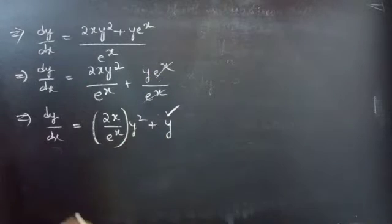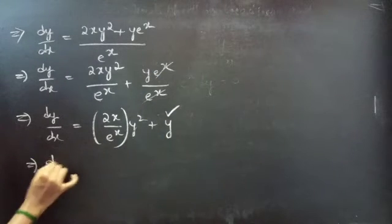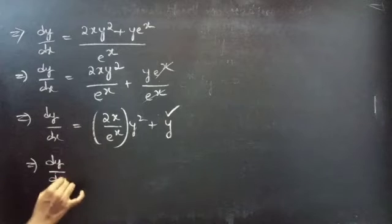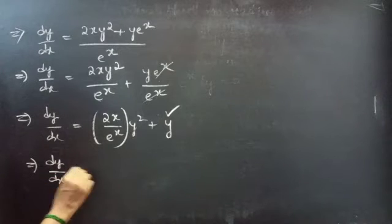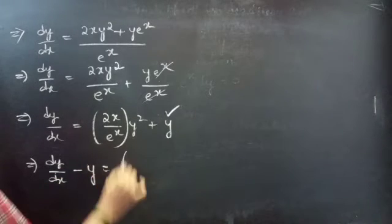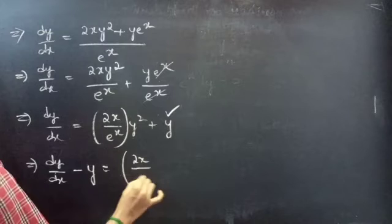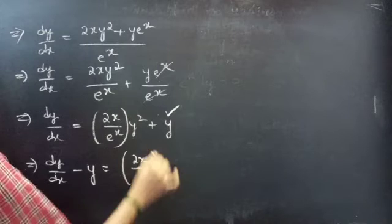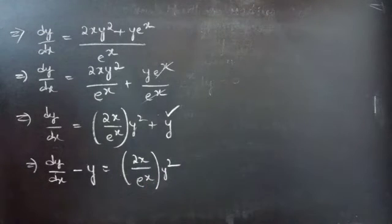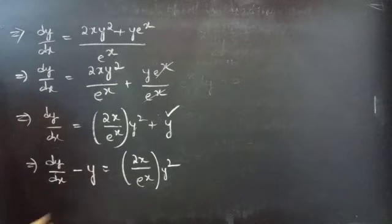Now bring this y to the LHS. We will get dy by dx minus y equals to 2xy·e^(-x)·y², which is in Bernoulli's form.